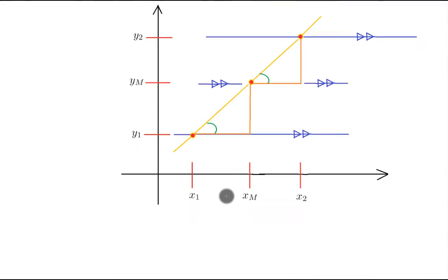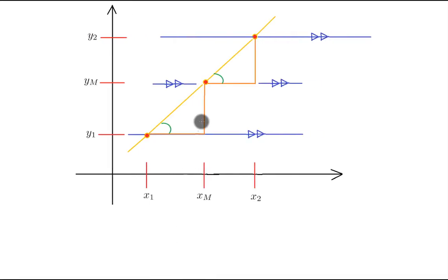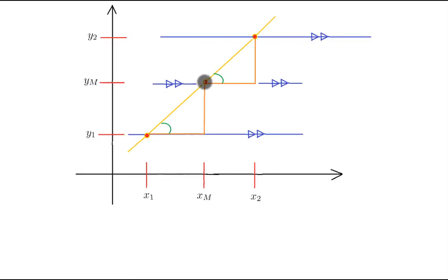Now let's start with this diagram. Here we have x1, xm, x2, y1, ym, and y2. The m here stands for midpoint. So this point is the midpoint of this line segment. And I'm going to draw two triangles in that line segment.